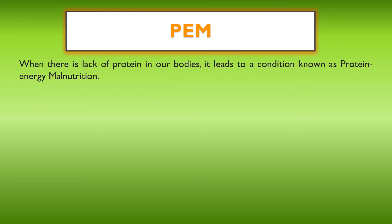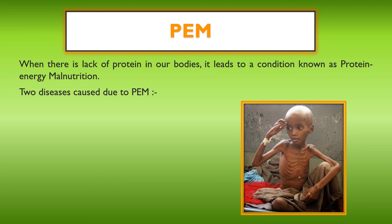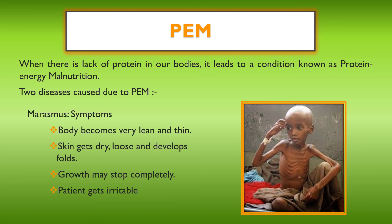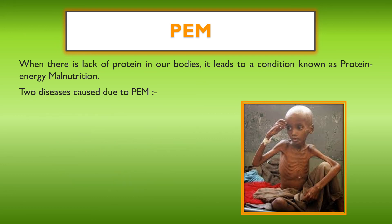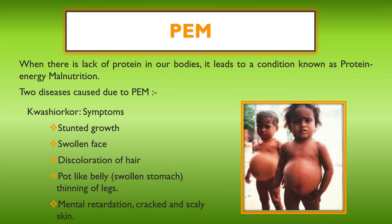Next is PEM — protein energy malnutrition. When there is a lack of protein in our bodies, it leads to protein energy malnutrition. Two diseases are caused due to PEM. The first is marasmus, with symptoms including the body becoming very lean and thin, skin getting dry, loose, and developing folds or wrinkles, growth stopping completely, and the patient becoming irritable. The second is kwashiorkor, with symptoms of stunted growth, swollen face, discoloration of hair, pot-like belly, thinning of legs, mental retardation, and cracked and scaly skin.